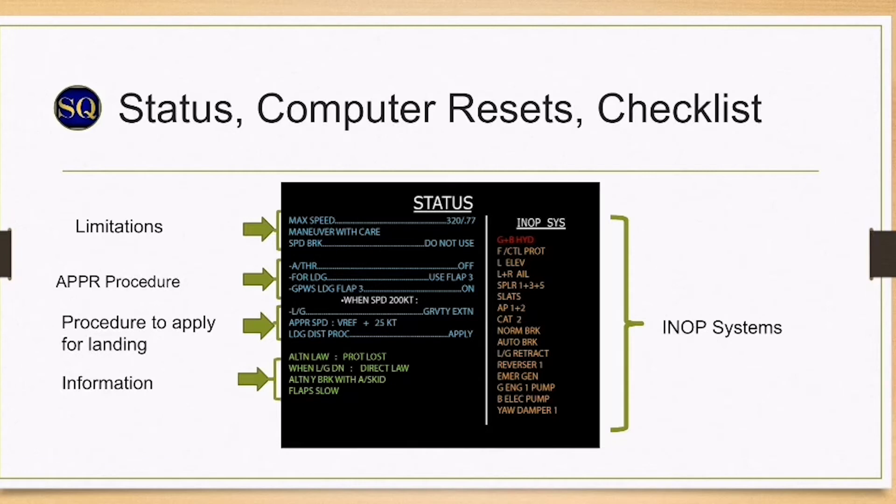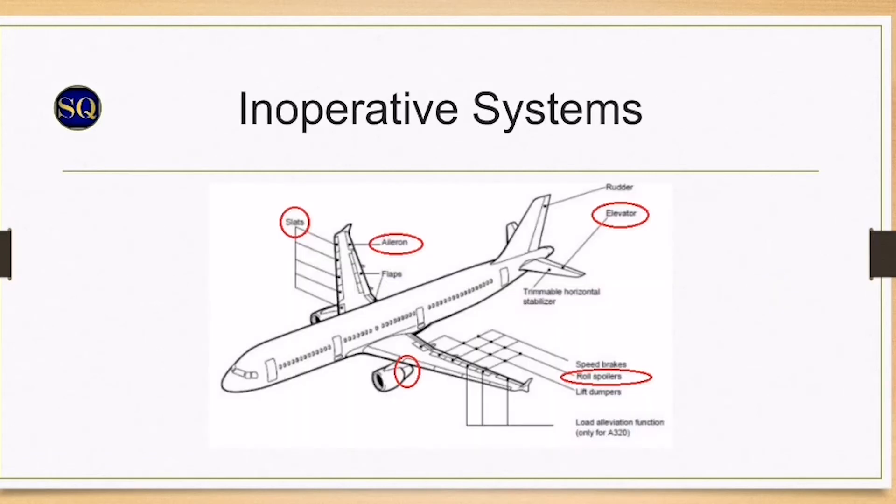Spoilers 1, 3, and 5 are inoperative, which will affect the landing distance. The slats are inoperative and the flaps are slow to extend. The left and right ailerons are inoperative, which will affect roll control, and the left elevator is inoperative, which will affect pitch control.